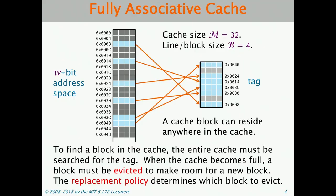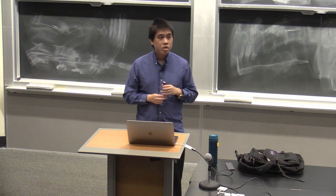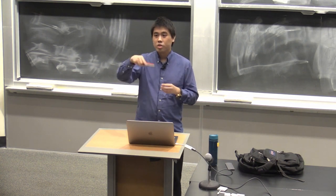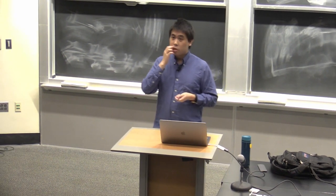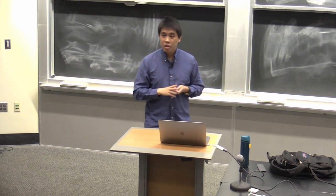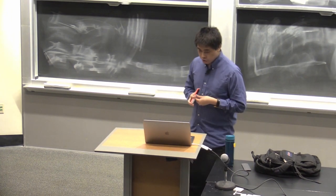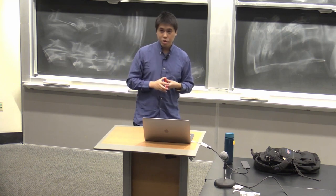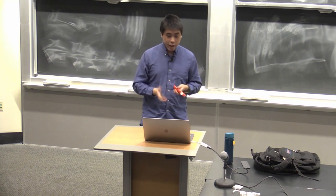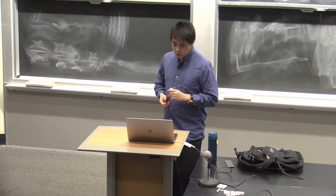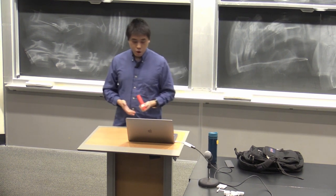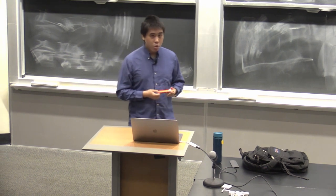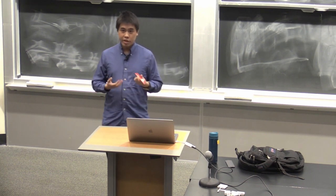What's the disadvantage of the fully associative scheme? It's slow. The disadvantage is that searching for a cache line in the cache can be pretty slow, because you have to search the entire cache in the worst case since a cache block can reside anywhere. Even though the search can go on in parallel, it's still expensive in terms of power and performance to search most of the cache every time.